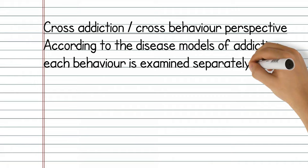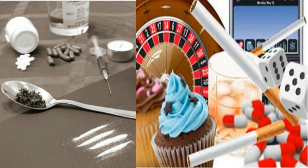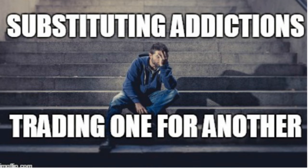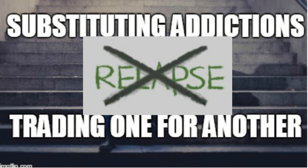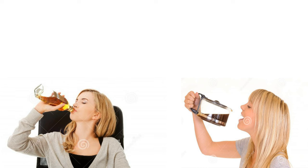Cross addiction — cross behaviour perspective. According to the disease models of addiction, each behaviour is examined separately; therefore an addiction to cigarettes is seen as a separate and different addiction to alcohol. However, cross addiction perspectives examine similarities and associations between separate addictions or behaviours. In the case of substance addiction, a medication or another drug or behaviour can stimulate the same receptor sites in a person's brain that regulates addiction and addictive behaviour. So if a person who has an addiction is given another addictive drug, the individual may relapse into the drug of choice through stimulation of the same mechanisms underpinning their original addiction. One might assume they are no longer an addict and are free from addictive drugs or behaviours, but have become unknowingly addicted to other drugs or behaviours.